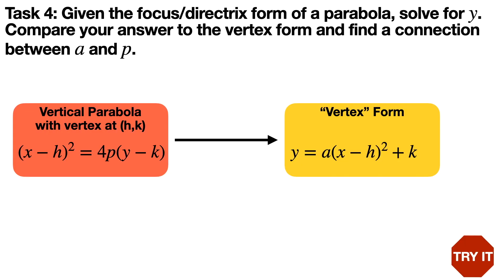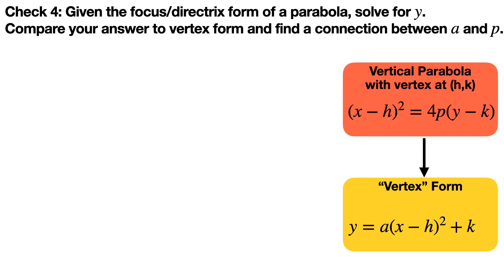The last task is to figure out the relationship between the focus-directrix form and the vertex form, which share the expression x minus h squared. Given the focus-directrix form, algebraically solve for y, then compare your answer to the vertex form to find a connection between variables a and p. Your goal is to isolate y. Try it out.